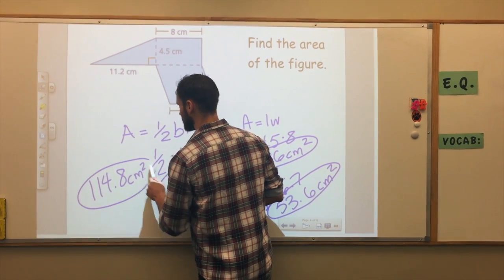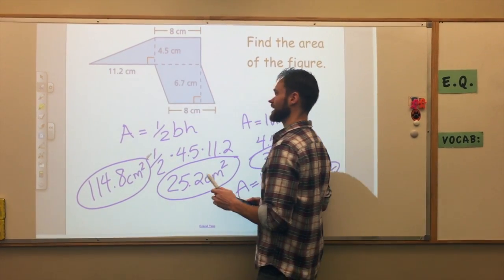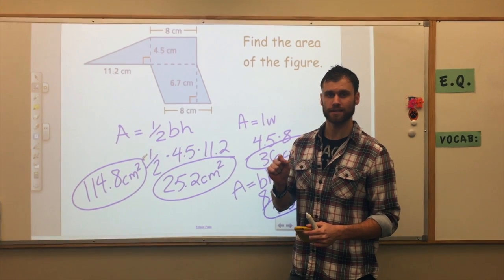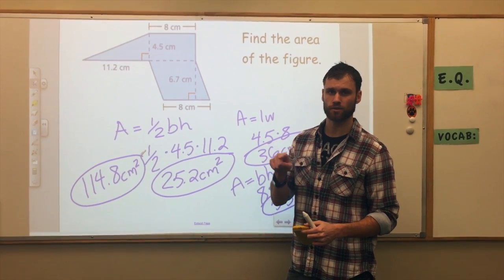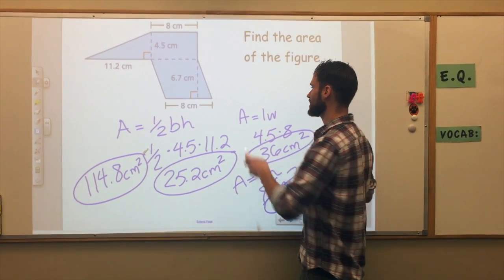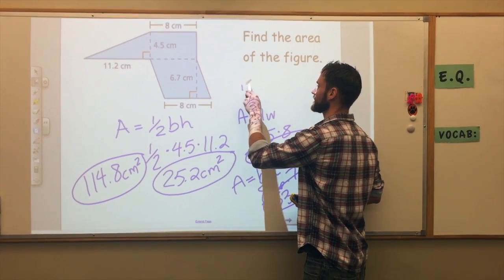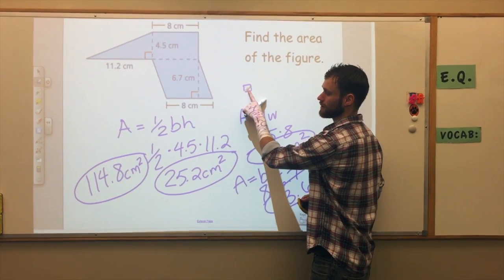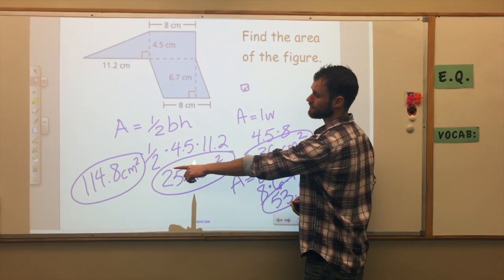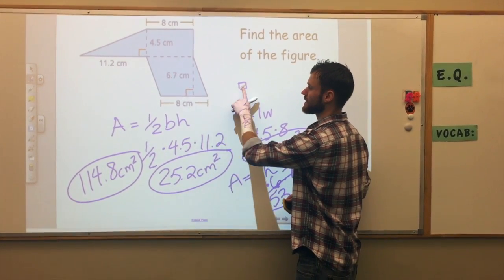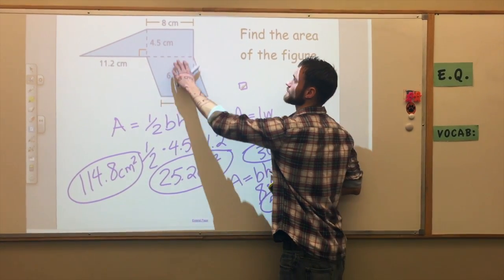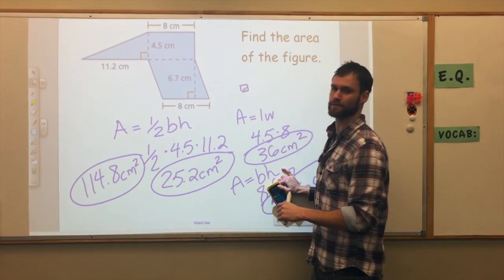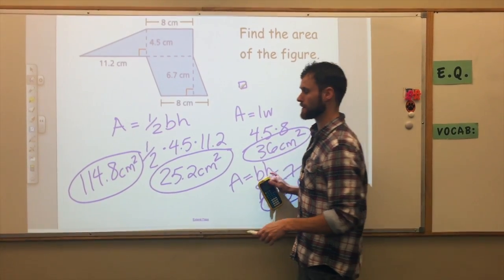That means if I had a unit square that was one centimeter by one centimeter, it would take 114.8 of them to fill up the inside of this entire figure — that's what area means.